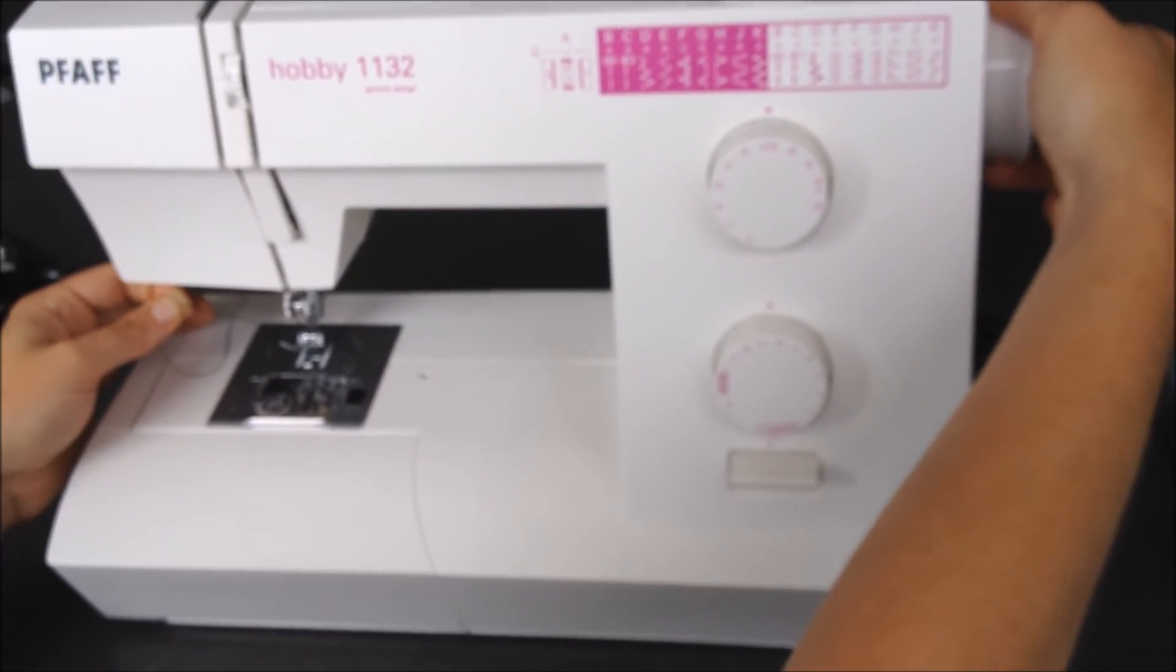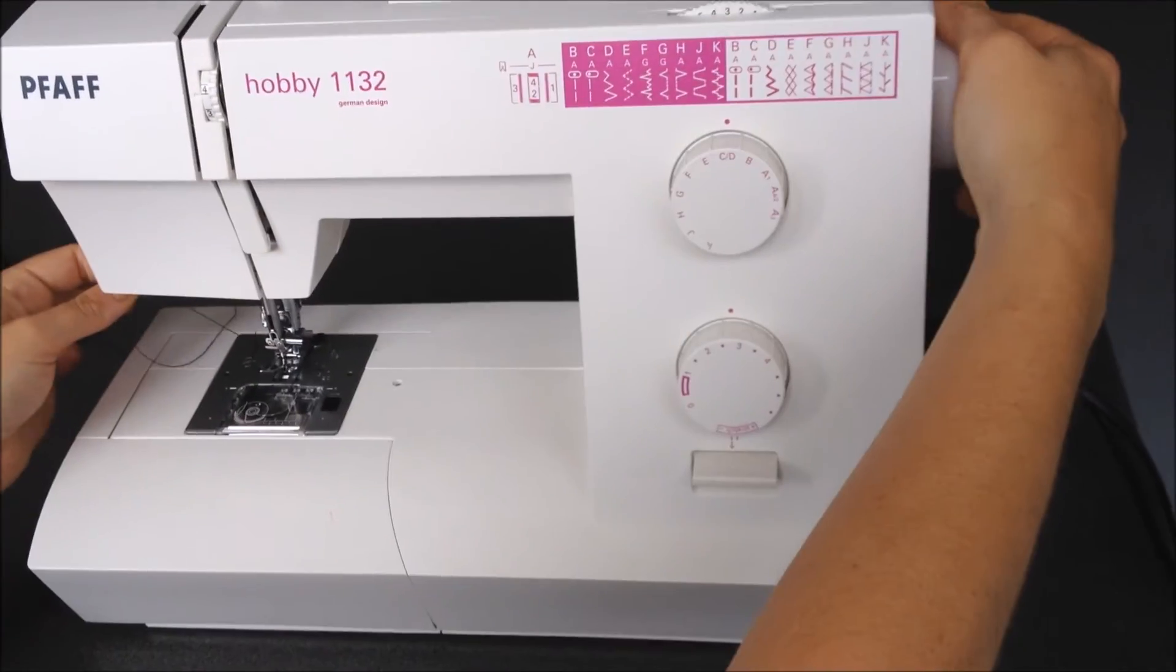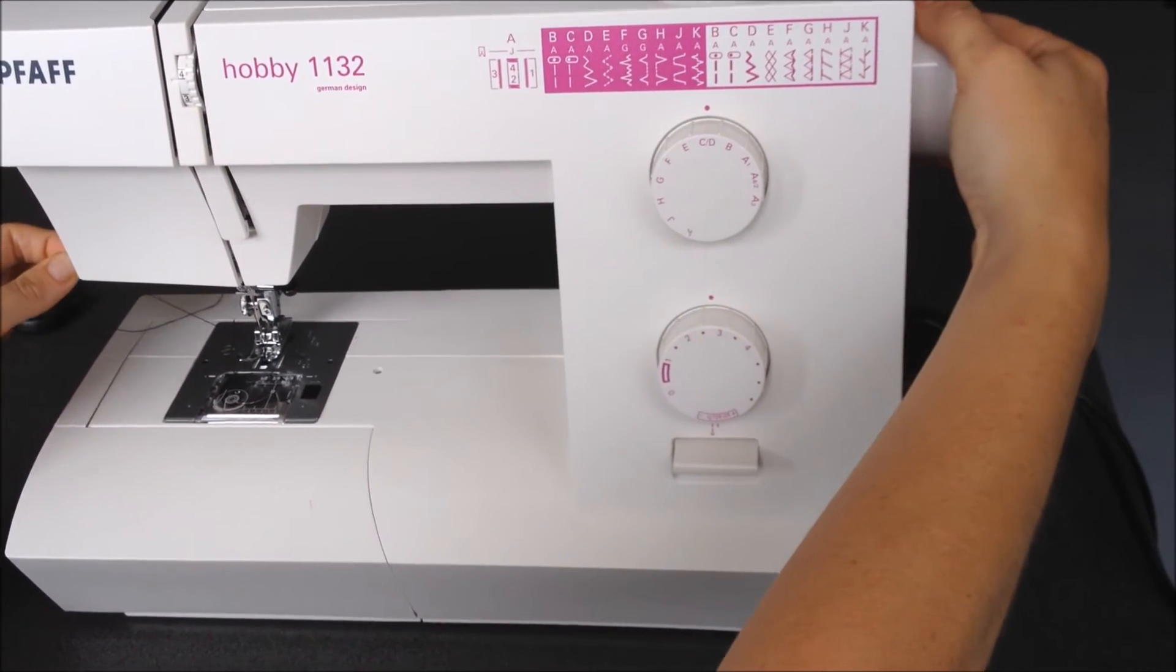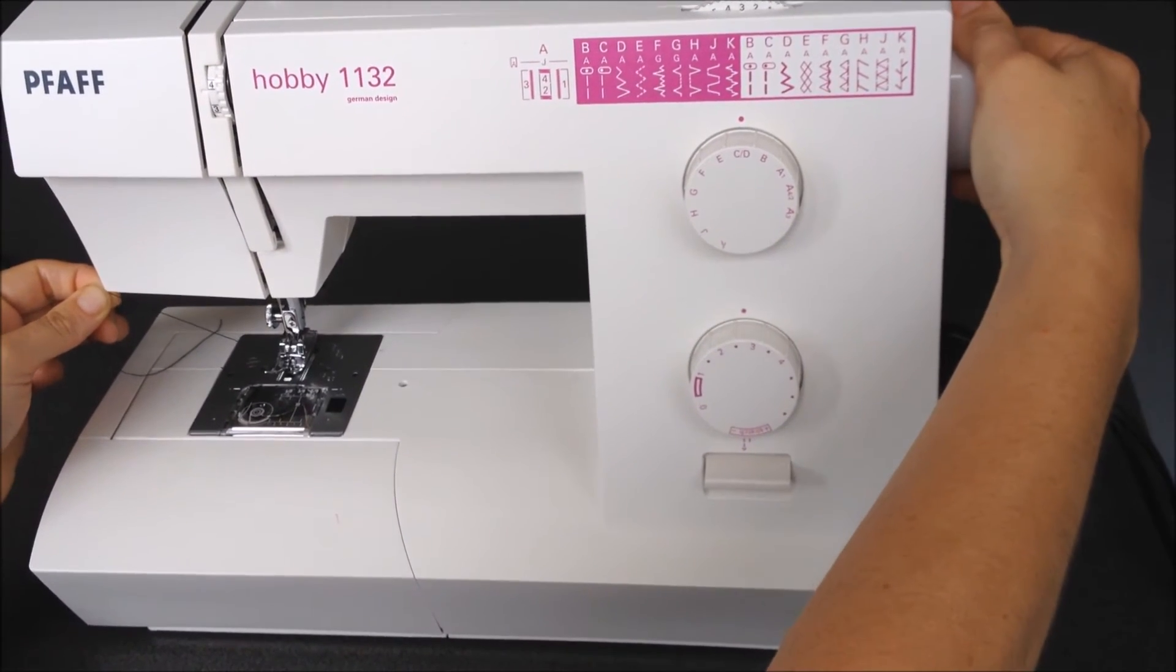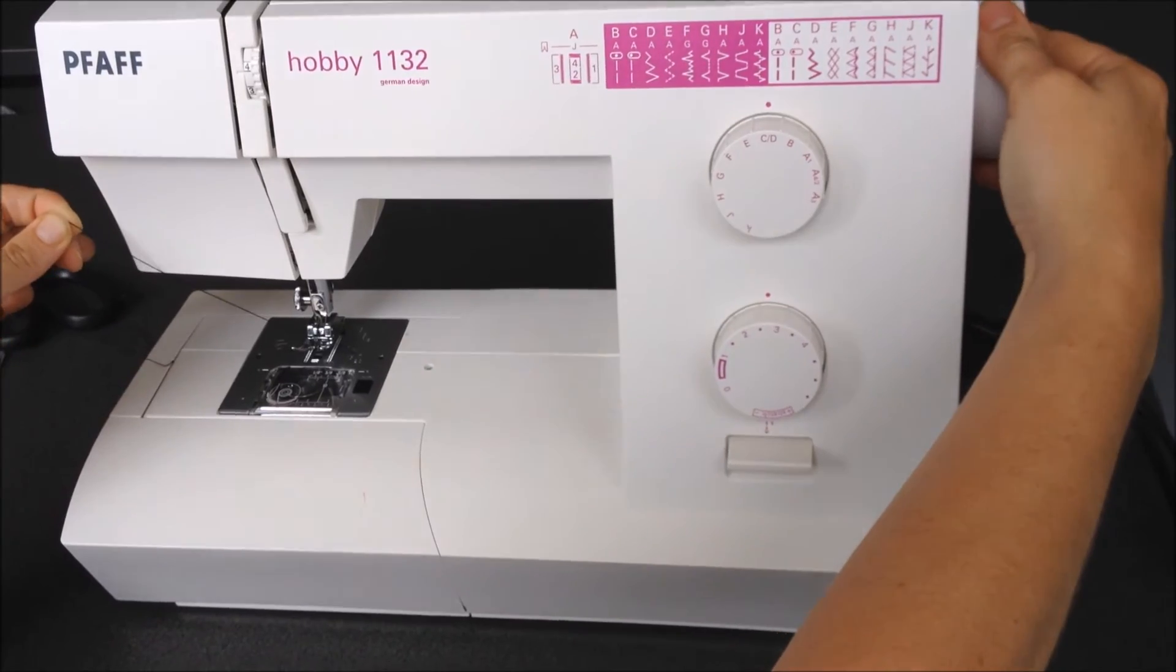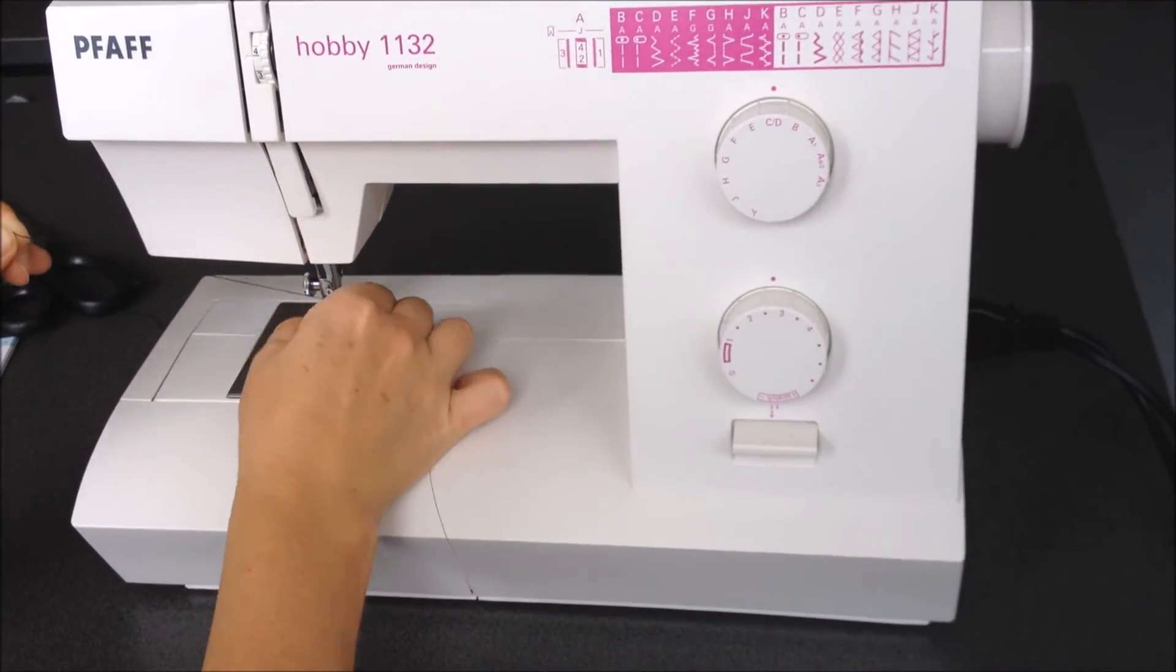As you turn the hand wheel towards you keep a firm grip on the thread and what happens is the top thread actually goes down and picks up the bottom cotton and it will come up through the bottom.